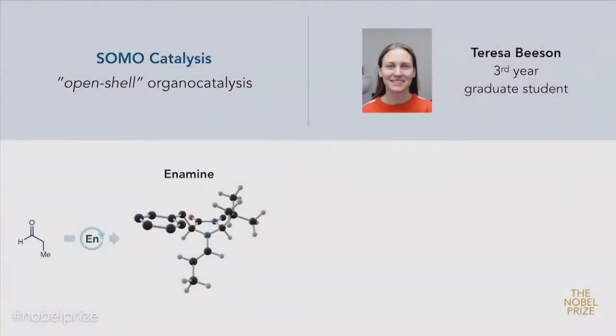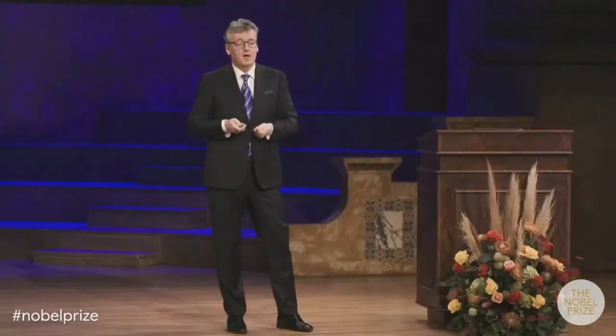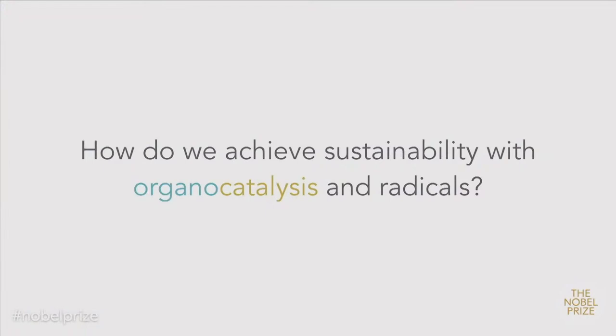Radicals allow you to do radical things — radical reactivity — and so we became really interested in merging this with organocatalysis. This was work conceived of and executed by a really fantastic graduate student in my group by the name of Theresa Beeson. What Theresa did was say: I should be able to make these same enamines, but instead of using them to do ordinary chemistry, what if we actually plucked an electron out to change its reactivity so that it's now a radical? This radical should allow you to do many, many different new types of chemical reactions. That turned out to be exactly the case, and we published many new types of processes using what's called this SOMO catalysis.